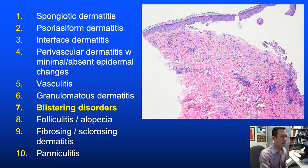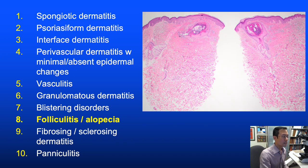Blistering disorders can be intraepidermal or subepidermal, with the mechanism of the split varying depending on the disease process. Folliculitis is characterized by inflammation within or around hair follicles, which are often distorted or ruptured—these histologic features are central in the inflammatory or cicatricial primary alopecias.